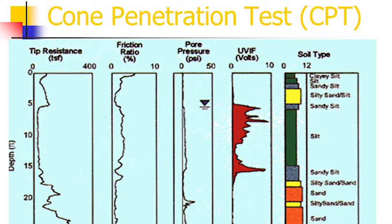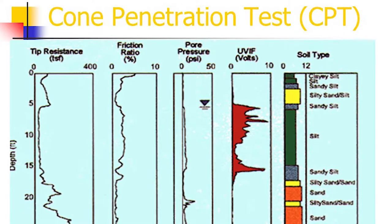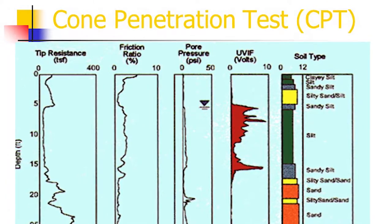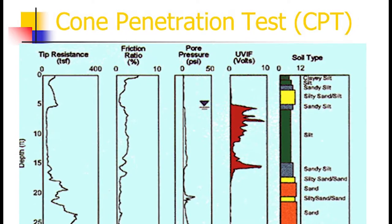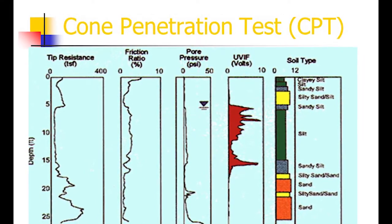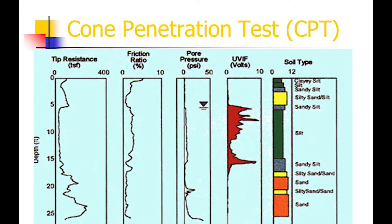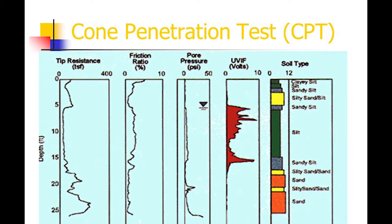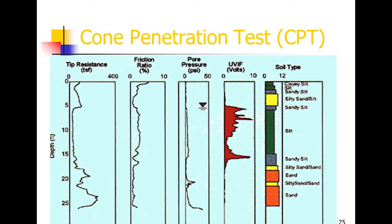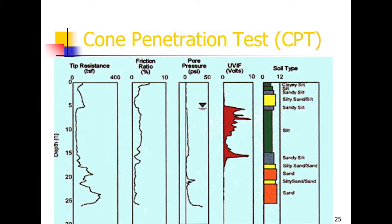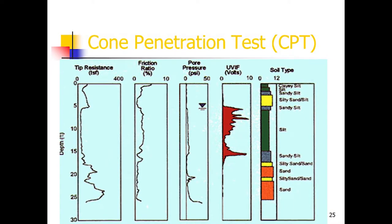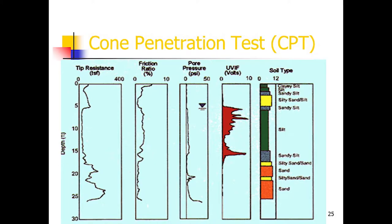Cone penetration test results are plotted showing tip resistance, friction ratio (sleeve friction ratio), and pore water pressure. The water table is also measured and noted. Soil type is identified from the data, and averages are computed to give cone resistance profiles.